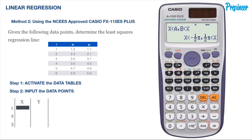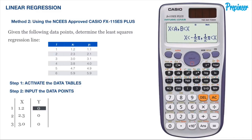Press the equals button. This will take you to the next data line for the x column, where you will input the remaining x data points and press the equals button. Once all the data points are input into the x column, hit the right button to switch over to the y column. You will need to press the down scroll arrow once to get to the first row of the y column. Input all of these values just as you did for the x values, and once complete, hit the AC button.